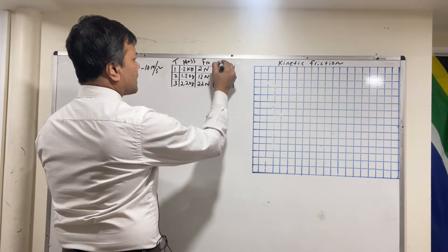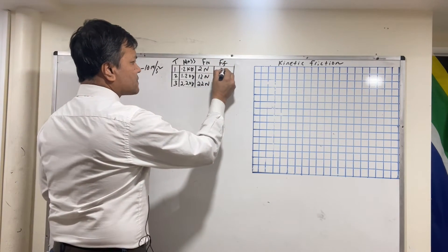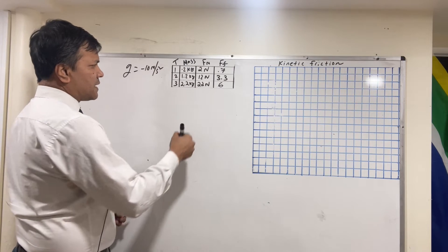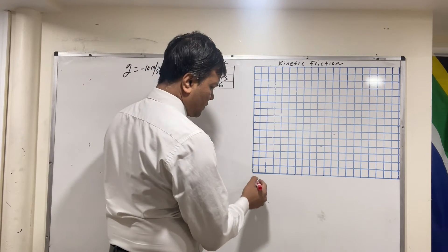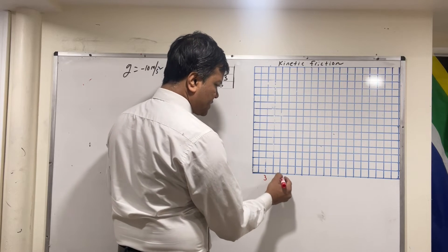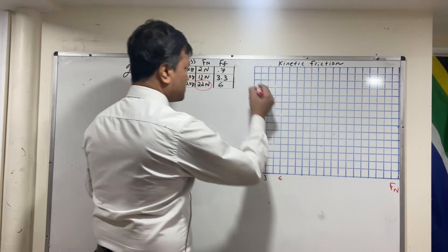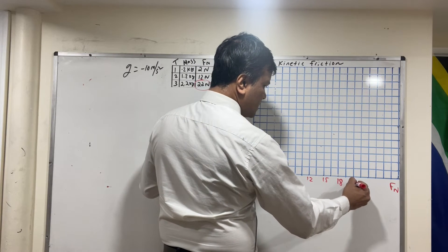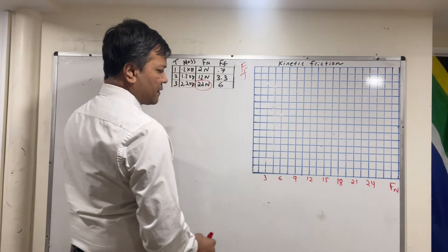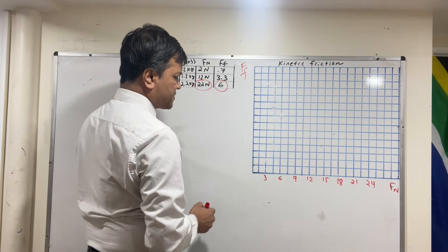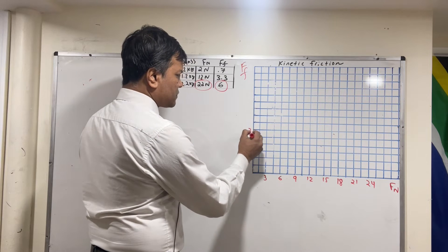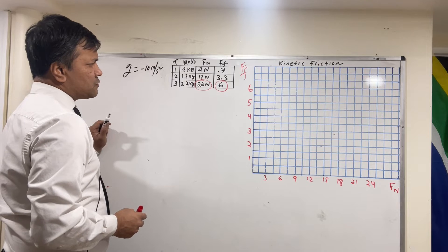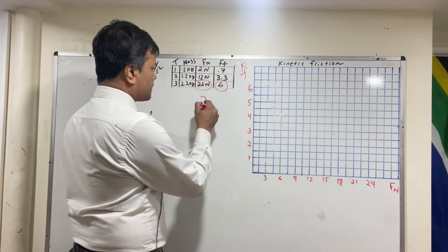The friction forces collected in the lab are 0.7 N, 3.3 N, and 6 N. Our biggest F_n is 22, so on the x-axis we'll go by increments of 3: 3, 6, 9, 12, 15, 18, 21, 24. We label the x-axis F_n and the y-axis F_f. The biggest F_f is 6, so we'll go by increments of 0.5: 1, 2, 3, 4, 5, 6.